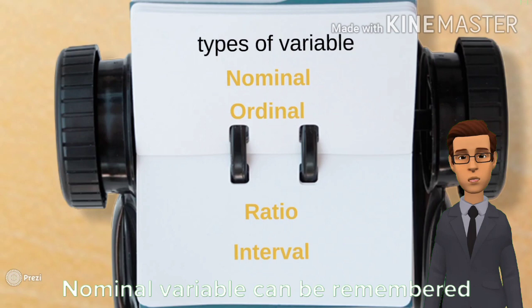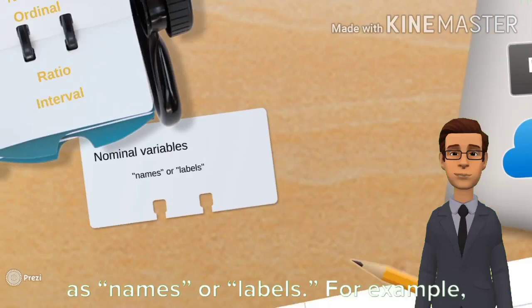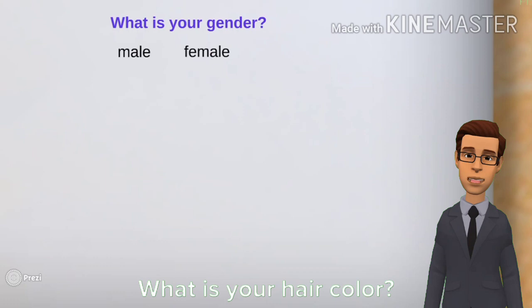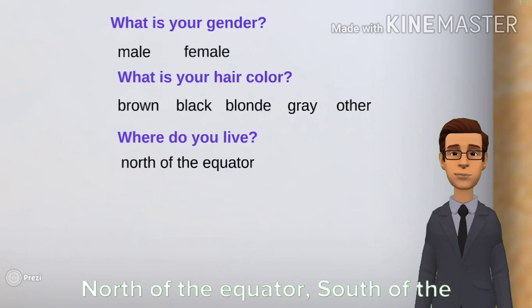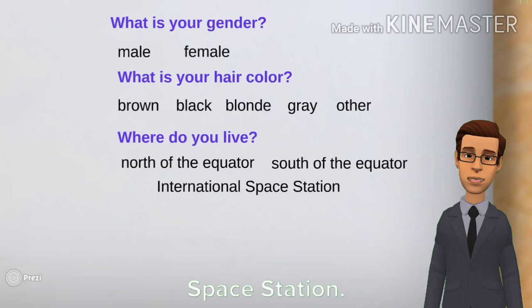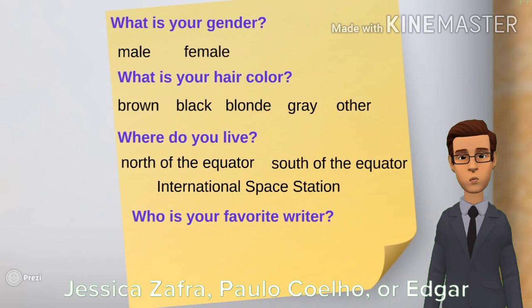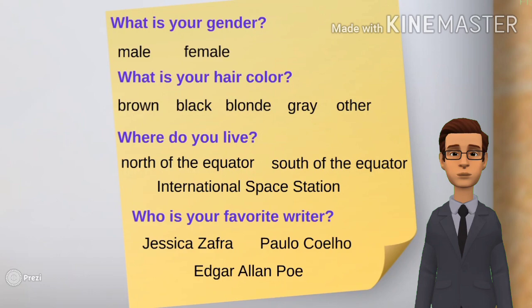Nominal variable can be remembered as names or labels. For example, what is your gender? Male or female? What is your hair color? Brown, black, blonde, gray, or other? Where do you live? North of the equator, south of the equator, or neither, in the international space station. Who is your favorite writer? Jessica Zafra, Paolo Coelho, or Edgar Allan Poe?